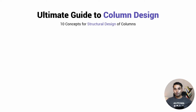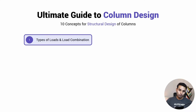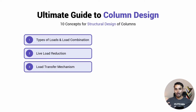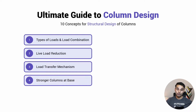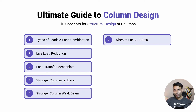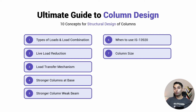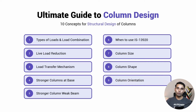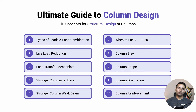So these were the 10 concepts for structural design of columns: (1) types of loads and load combinations, (2) live load reduction, (3) load transfer mechanism, (4) stronger columns at the base due to cumulative loads, (5) strong column and weak beam design per IS 13920, (6) when to use IS 13920 based on seismic zone, (7) column sizes and their dependencies, (8) column shapes based on load type, (9) column orientation based on plan and loads, and (10) column reinforcement limits.